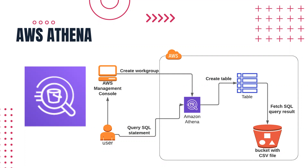Hi, welcome to my channel. In today's video I'll be talking about AWS Athena and how to use it — how we can query files saved in an S3 bucket. I'll show you a small demo for that, how to create a database, what kind of data can be queried, and more. From the console, a user can create a workgroup, choose a CSV file saved in an S3 bucket, create a table, and then write different queries on that.